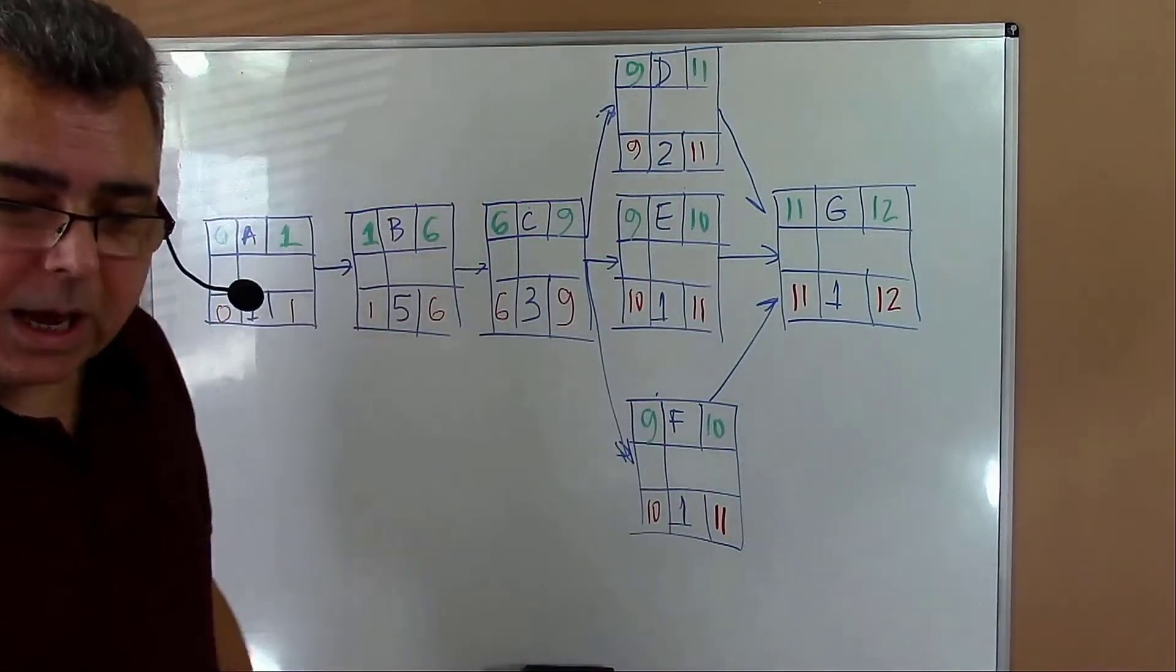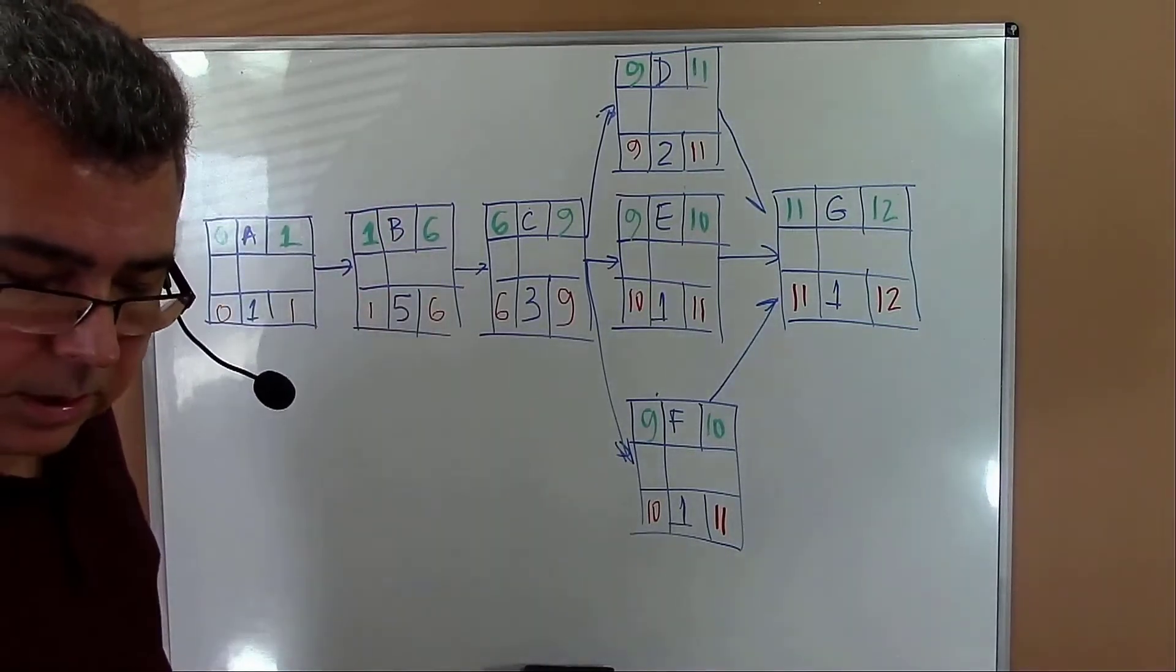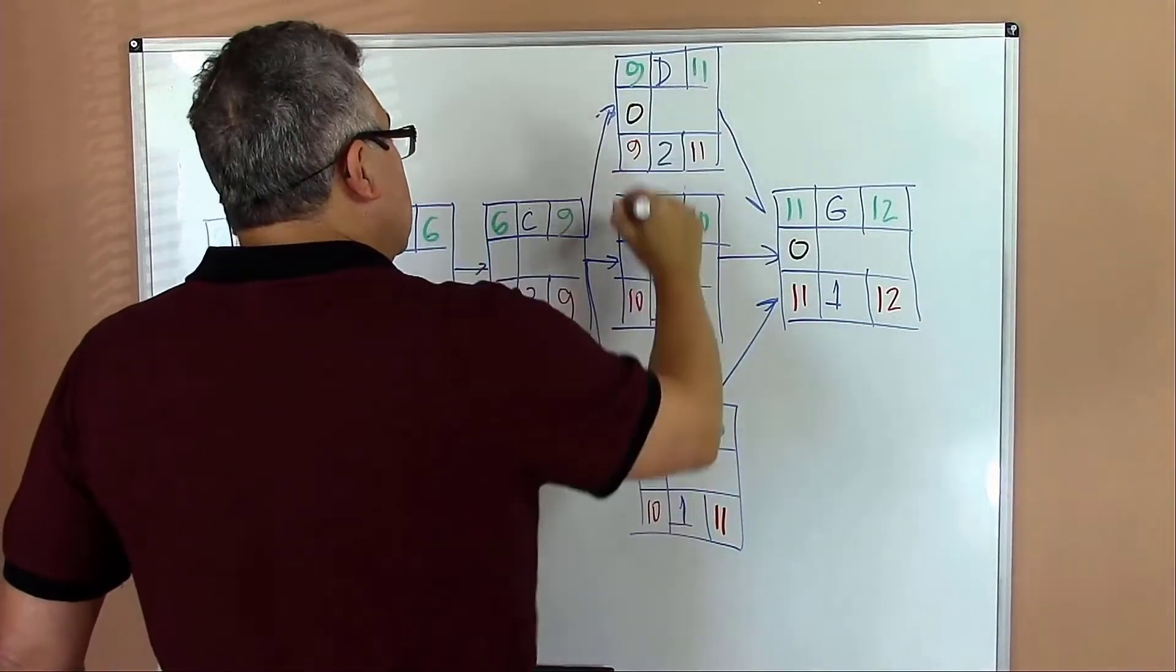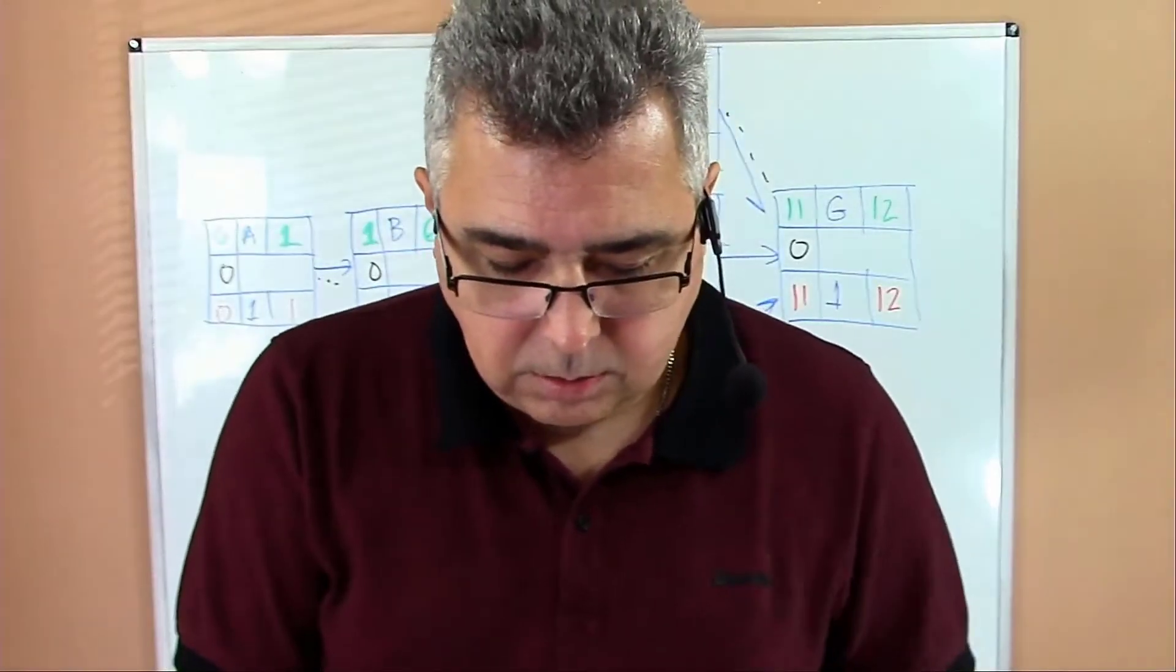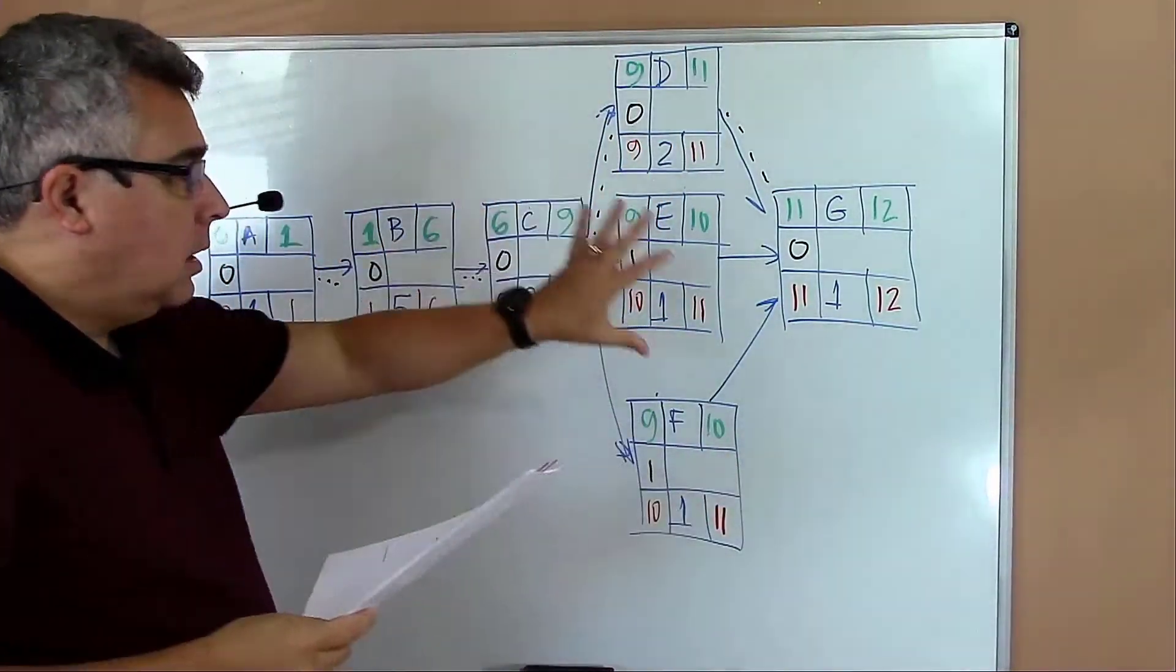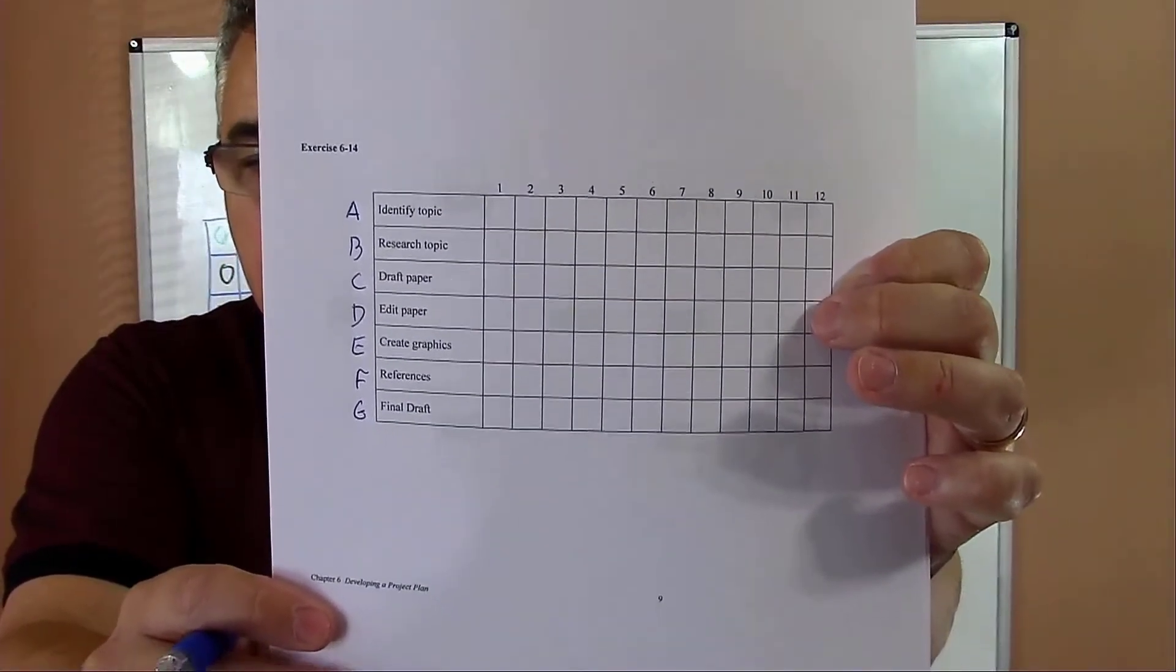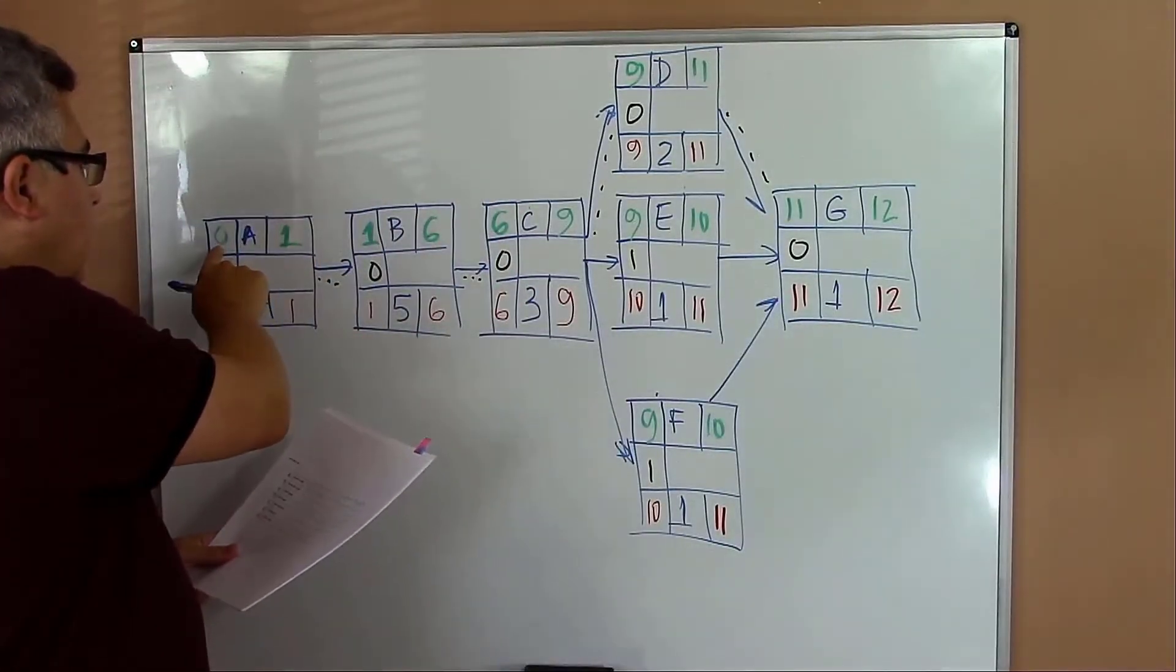Here we can identify the slacks: zero, zero, one, one, zero, zero, zero, zero. What we're doing now is moving the information from the AON to the Gantt chart. How we prepare the Gantt chart? We go here and see the information.